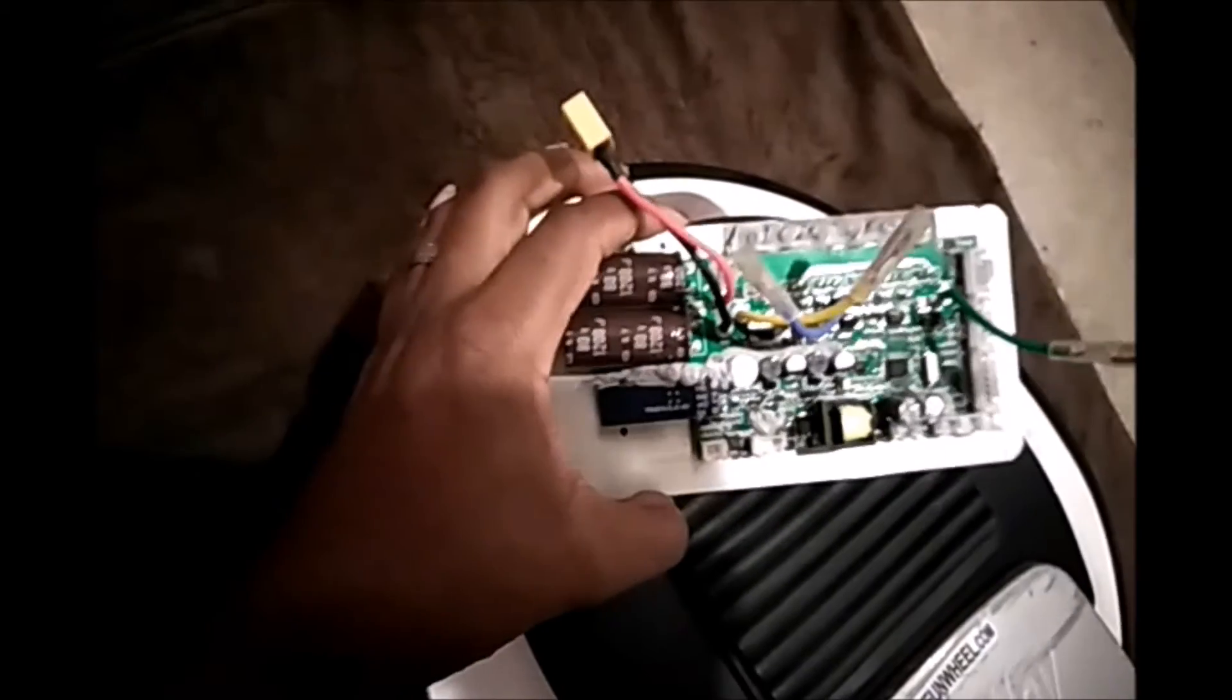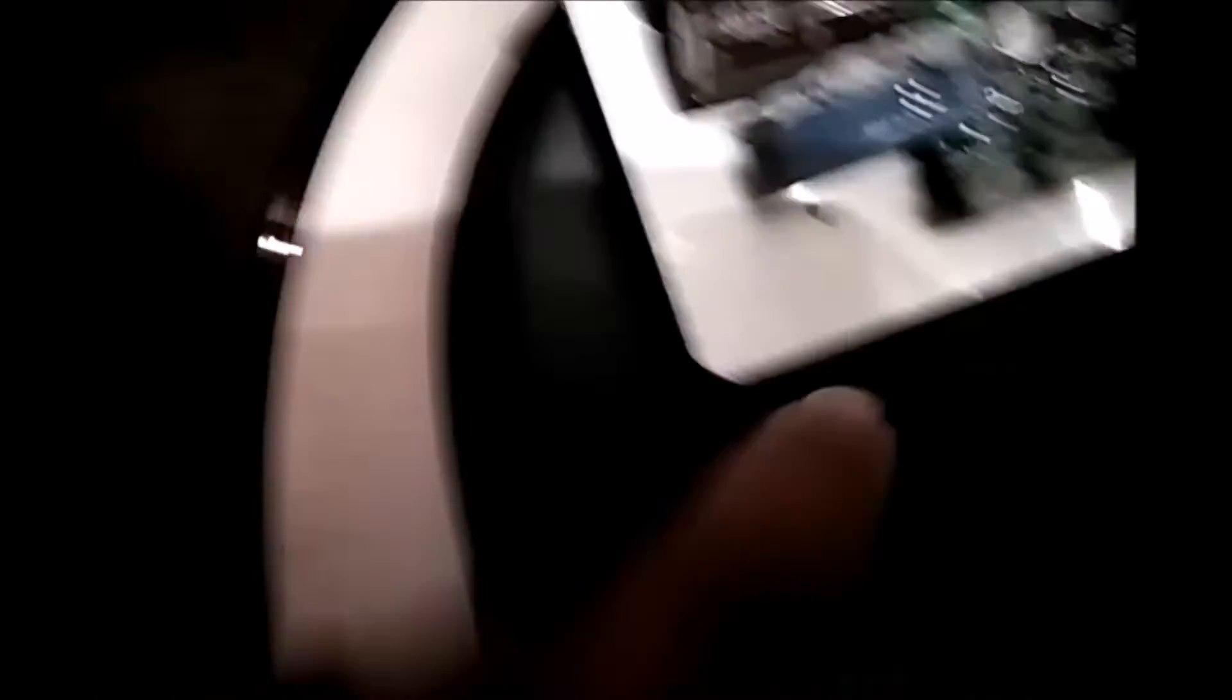The power button will be closest to the ground. I have a main board here that's out just so we can understand how it's oriented. It's oriented like this in the unicycle, so your Bluetooth module is actually right there. I'll take it out so you can see it.